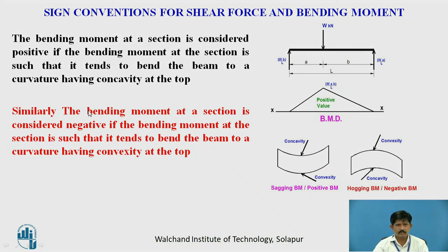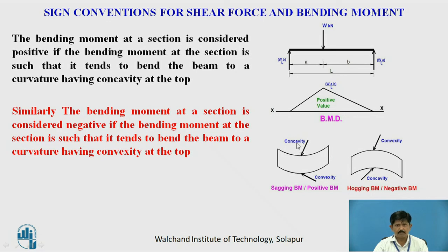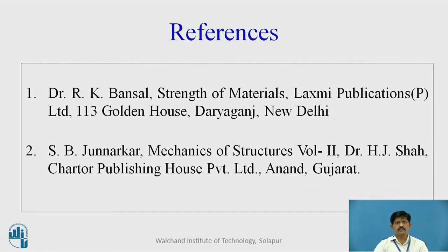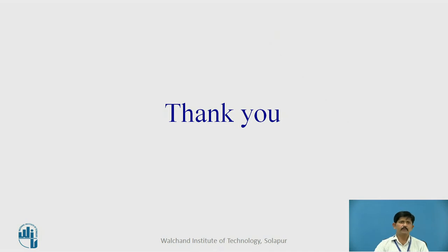For sign convention of bending moment: a bending moment at a section is considered positive if it tends to bend the beam to a curvature having concavity at the top — this is called a sagging beam. A bending moment is considered negative if it tends to bend the beam to a curvature having convexity upward, which happens in the case of cantilever beams. These are the references I have referred. Thank you very much for watching my video.